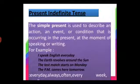The simple present is used to describe an action, event, or condition occurring in the present, at the moment of speaking or writing. We use simple present tense to talk about an action that takes place habitually — for example, 'I speak English every day.' We use it for universal truths or scientific facts, like 'The earth revolves around the sun.' Simple present is also used to denote scheduled or planned future events, like 'The test match starts on Monday' or 'The prime minister comes here tomorrow.'